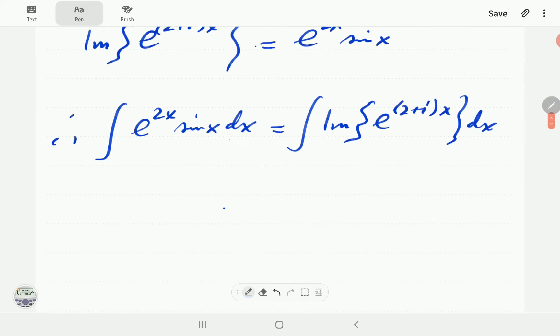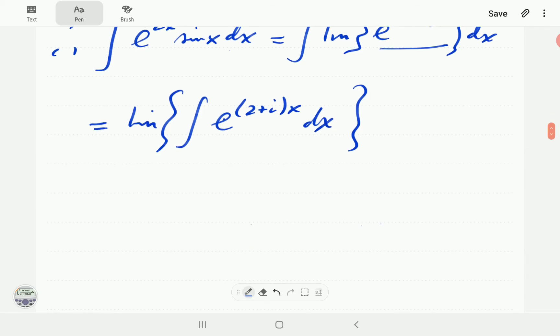Now we can swap the order of the taking the imaginary with the integral. So we can just do the integral of this. And then once we are done, we take the imaginary part that is still going to give us what we need.